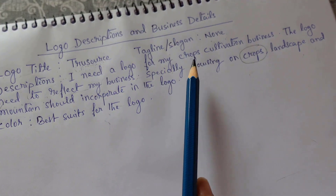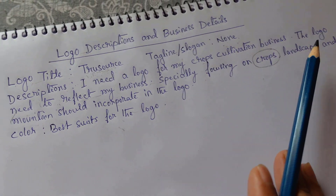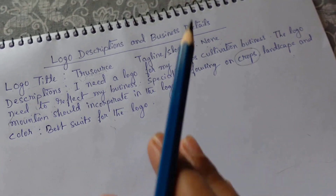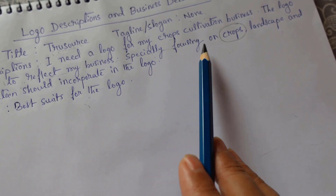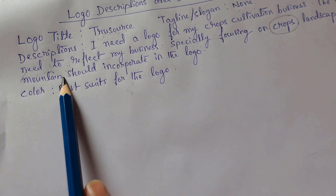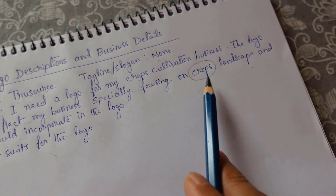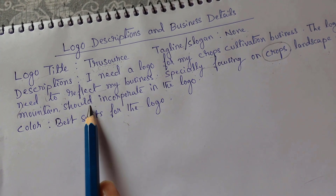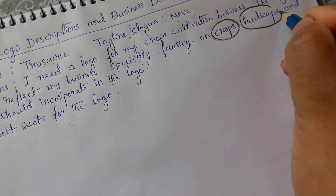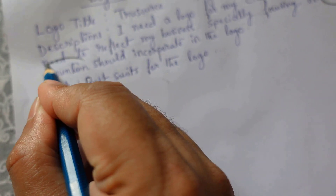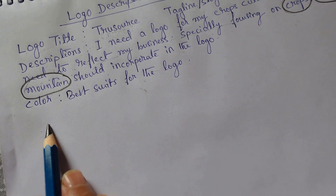The logo title is 'True Source'. Secondly, check if the client has given a tagline or slogan — here we don't have any tagline. Third and most important is the description, which tells about the client's business. The description says: I need a logo for my crop cultivation business. The logo needs to reflect the business, especially focusing on crops, landscape, and the mountain should be incorporated in the logo.